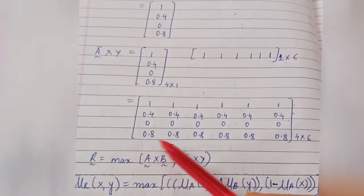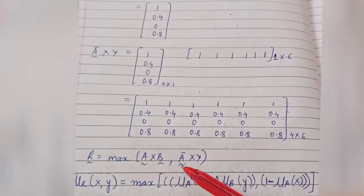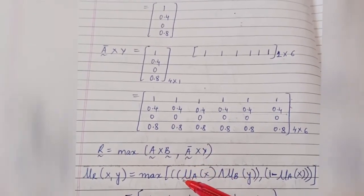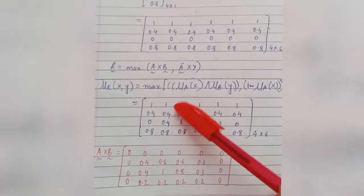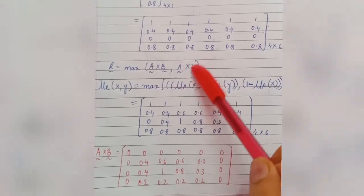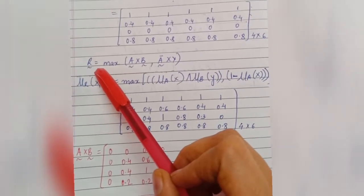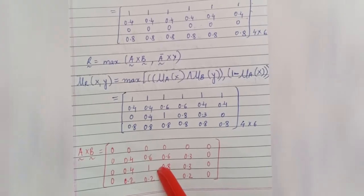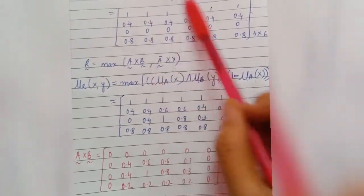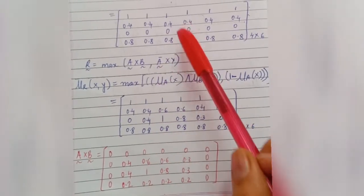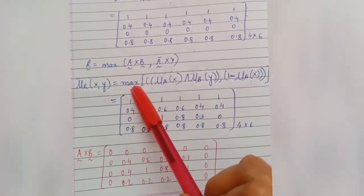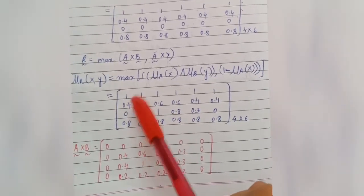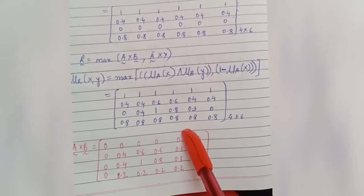We have calculated part one (A Cartesian B) and part two (A-complement Cartesian Y). Now calculate part three: the final relation R by taking the union — comparing both matrices element-wise and selecting the maximum.